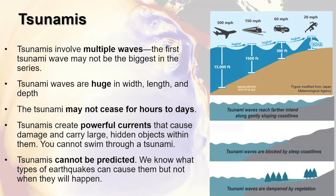Tsunamis involve multiple waves, and the first tsunami wave may not be the biggest in the series. In the Puget Sound, oftentimes the second, third, or fourth tsunami wave is the largest because of our complicated coastline and the way waves refract and bounce off islands and small narrow passages. Tsunami waves are huge in width, length, and depth, and the tsunami may not cease for hours to days. Tsunamis create powerful currents that cause damage and carry large hidden objects within them. You cannot swim or even surf through a tsunami. Tsunamis cannot be predicted — we know what types of earthquakes can cause them, but not when the earthquakes will happen.